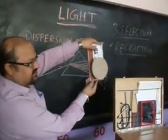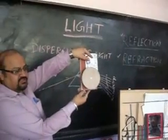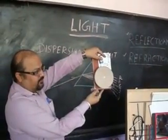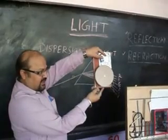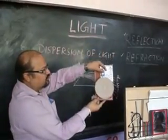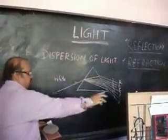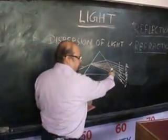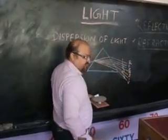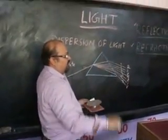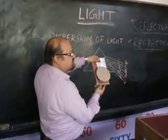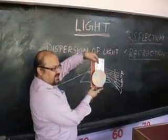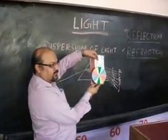Now all the seven colors are mixed and we get white color. So this proves that light is composed of seven colors, and when it passes through the prism it divides into seven colors, and seven colors come out from the prism. When we reunite these seven colors again, we get white color.